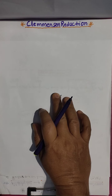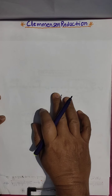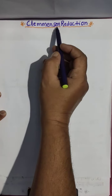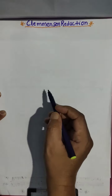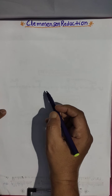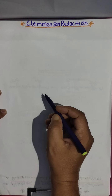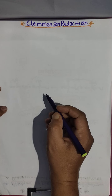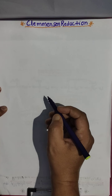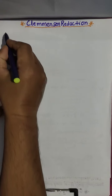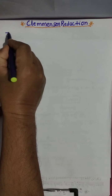Hi students, today we are going to discuss an important named reaction — Clemmensen reduction. It is a reduction reaction where aldehydes and ketones are reduced to alkanes in the presence of zinc amalgam and HCl.